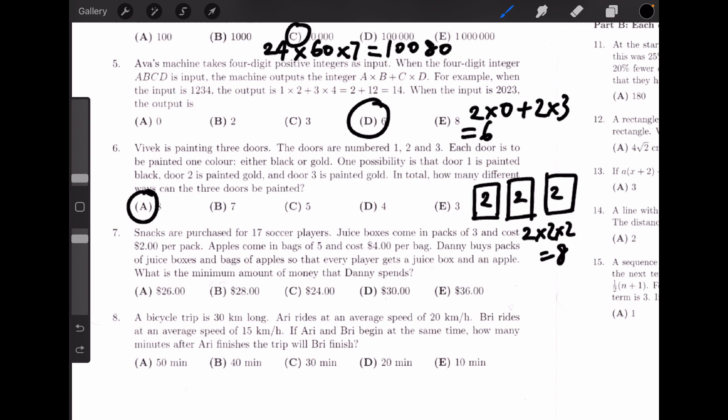Question 7. Snacks are purchased for 17 soccer players. Juice boxes come in packs of 3 and cost $2 per pack. Apples come in packs of 5 and cost $4 per pack. Danny buys packs of juice boxes and packs of apples so that every player gets a juice box and an apple. What's the minimum amount of money that Danny spends?